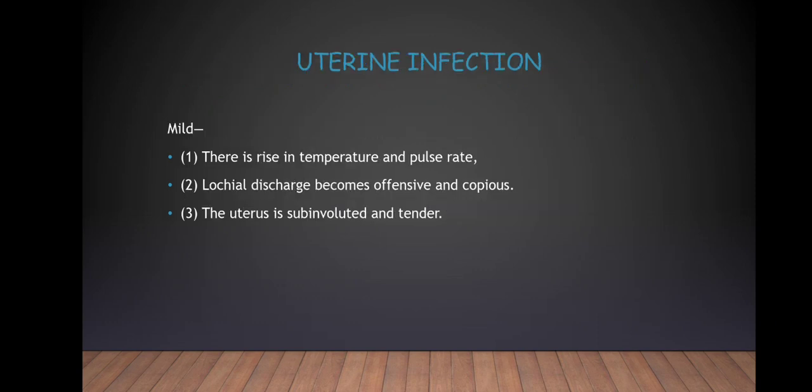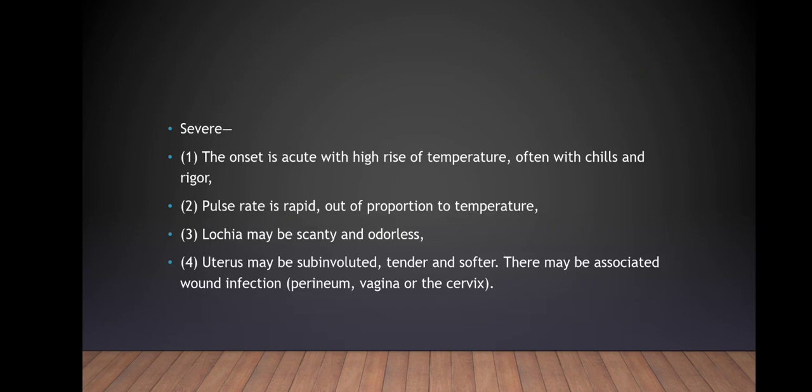Uterine infection — if mild: there is a rise in temperature and pulse rate, lochia becomes offensive and copious, and the uterus is subinvoluted and tender. If severe: the onset is acute with a high rise of temperature, often presenting with chills and rigors. Pulse rate is rapid and out of proportion to temperature — normally if temperature rises by 1 degree, heart rate rises by about 10 beats per minute, but here the heart rate will be disproportionately rapid. Lochia may be scanty and odourless. The uterus may be subinvoluted, tender and soft. There may also be associated wound infection of the perineum, vagina, or cervix.